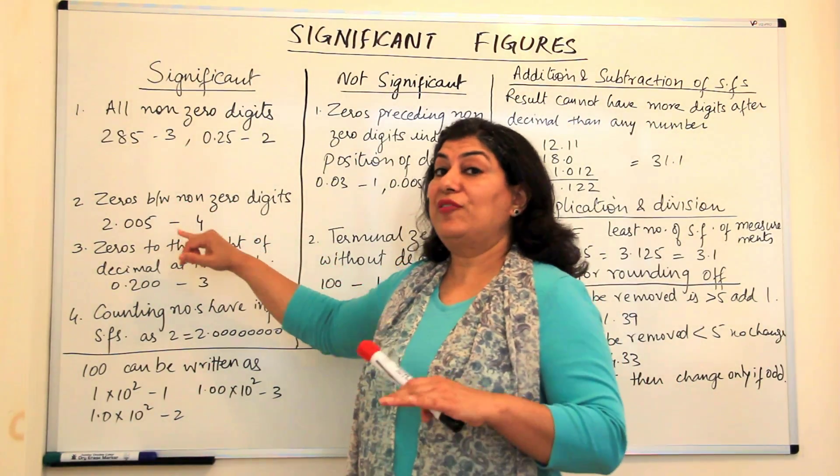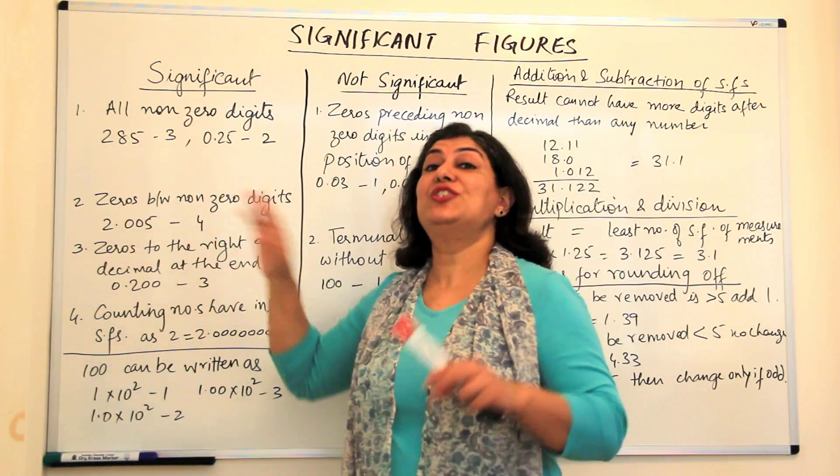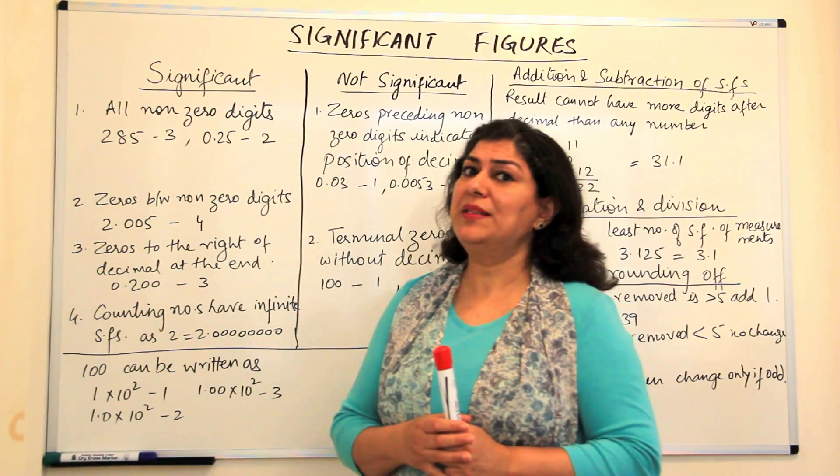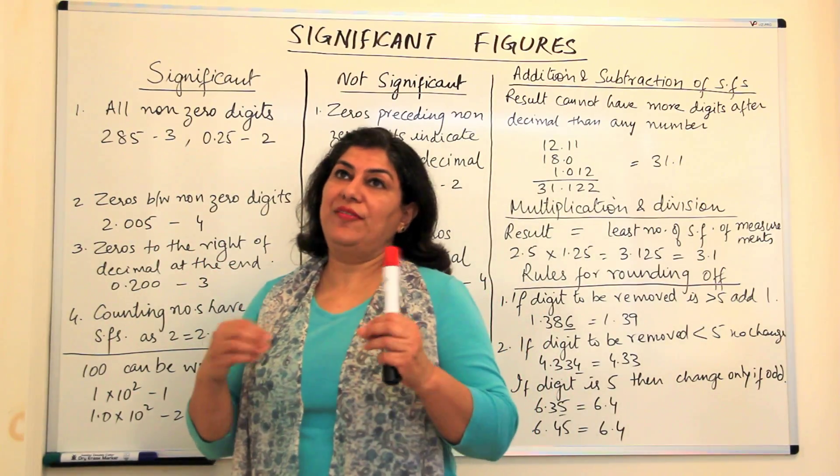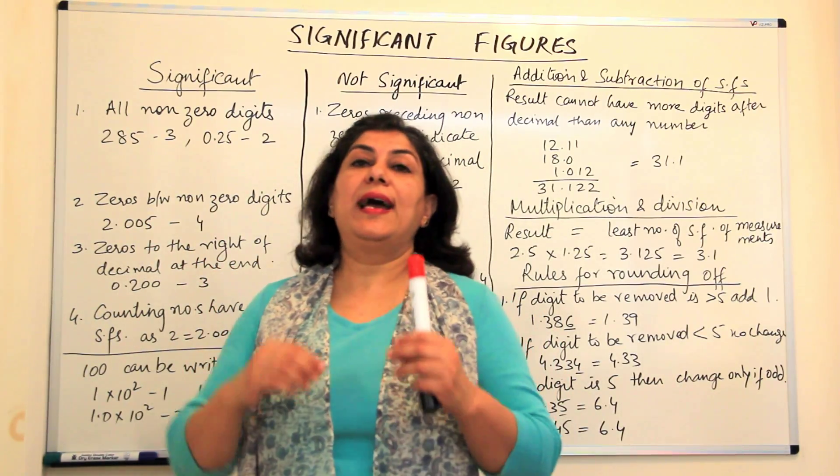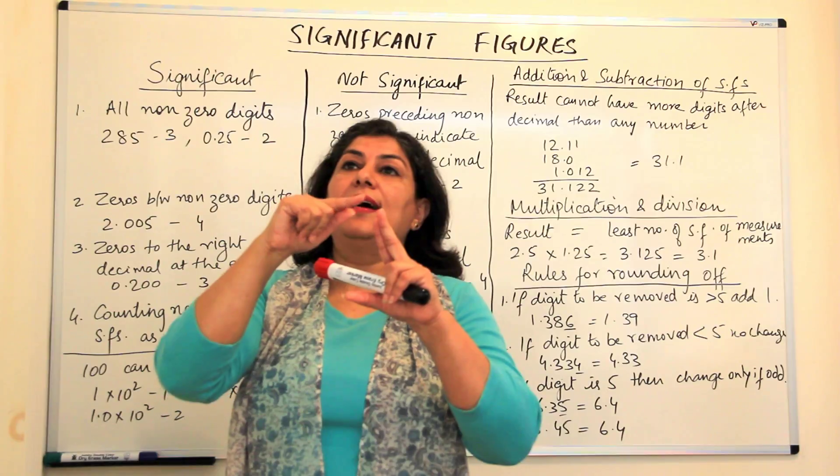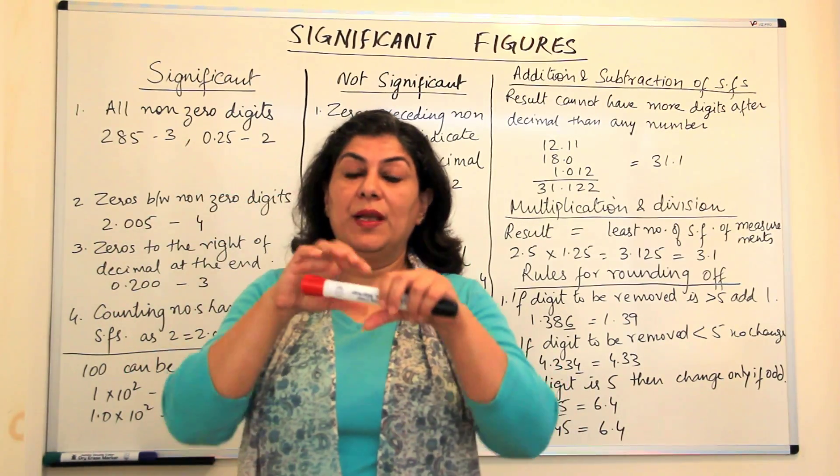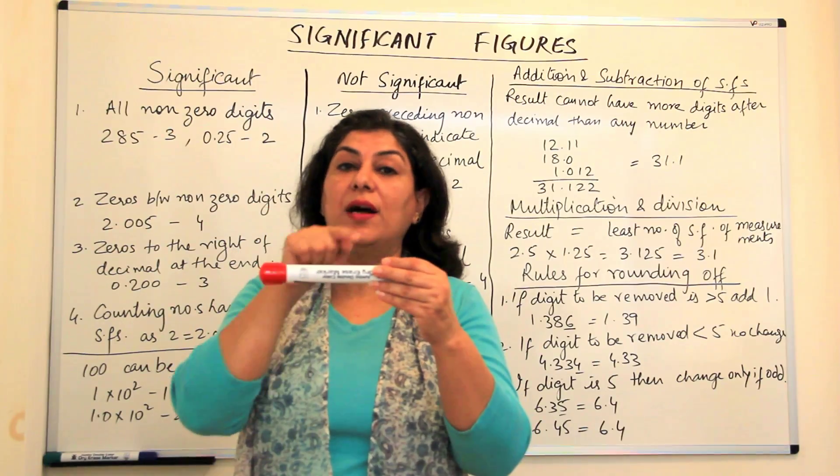The zeros that fall between two non-zero digits are always significant. What would be the reason for this? See, if I'm carrying out a measurement and I'm measuring something 101.